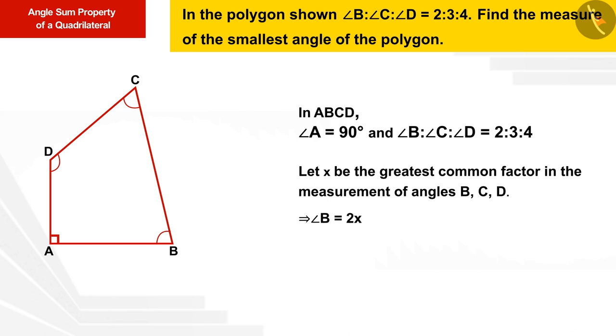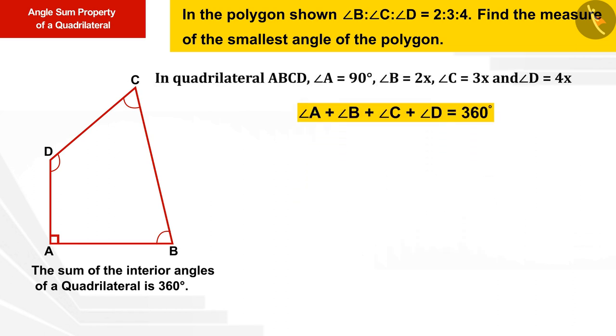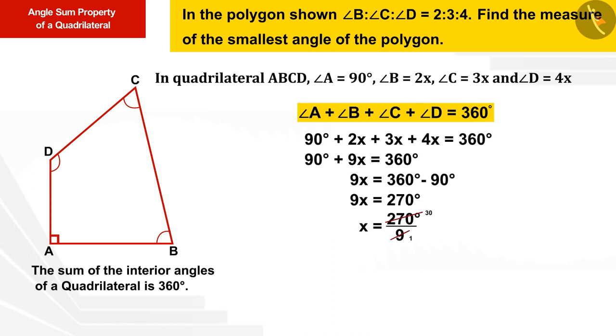As we know that the sum of the four angles of a quadrilateral is 360 degrees, which we can represent as a linear equation. Substituting all the values into it and further solving gives us a measure of x by 30 degrees.